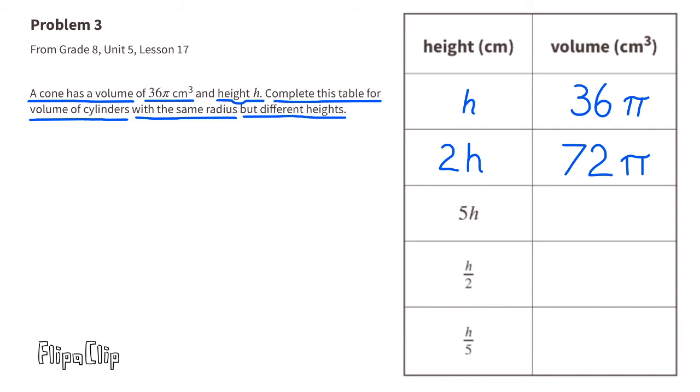For the next one it's 5 times h, so we need to multiply 36 times 5 times π. When the height is 5h, the volume is 180π cm³.